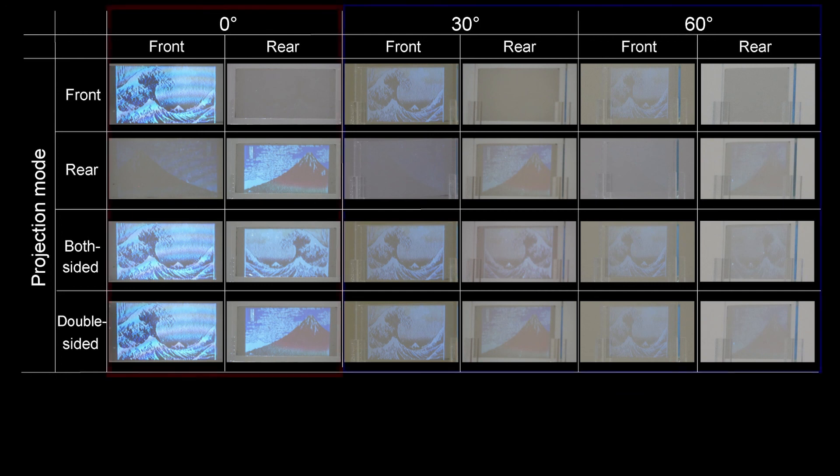However, the pictures in 30 and 60 degrees are darker than the ones at 0 degrees. It indicates that the screen's diffusivity is weak, so its fields of view are narrow.